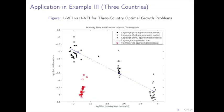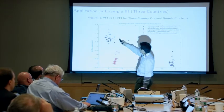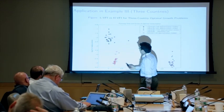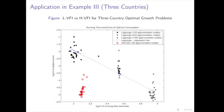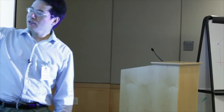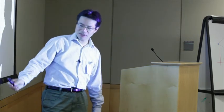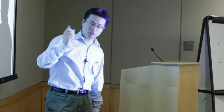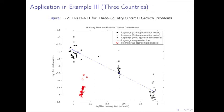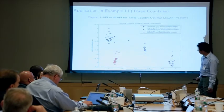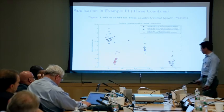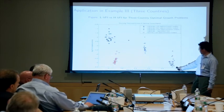For the three-country model with three dimensions, using 125 approximation nodes (5 nodes per dimension, tensor product) gives about 2 digits of accuracy. Increasing to 1000 nodes (10 per dimension) improves to about 5-digit accuracy, but takes about 8 times more computation time. Using Hermite approximation with just 125 nodes achieves the same accuracy as 1000 nodes with Lagrange, in the same time as the 125-node Lagrange — a savings of about 8 times.